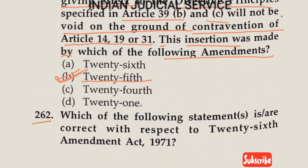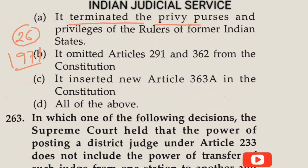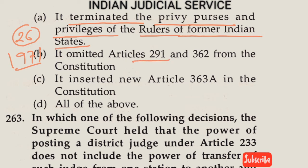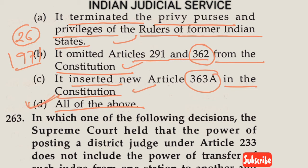Question number 262: Which statements are correct with respect to the 26th Amendment Act, 1971? Option A: It terminated the privy purses and privileges of rulers of former Indian states. Option B: It omitted Articles 291 and 362 from the constitution. Option C: It inserted a new Article 363A into the constitution. Option D: All of the above. All statements are true, so the answer is Option D.